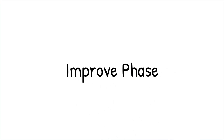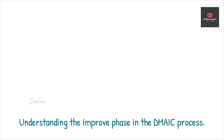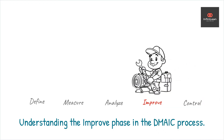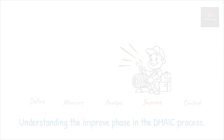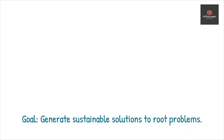Welcome to the Improve Phase — the fourth step in the DMAIC process, which stands for define, measure, analyze, improve, and control. This phase is about finding and implementing solutions to the problems identified during the previous steps, ultimately improving your business process. The goal is to brainstorm, assess, and choose solutions that are not only effective but also sustainable.